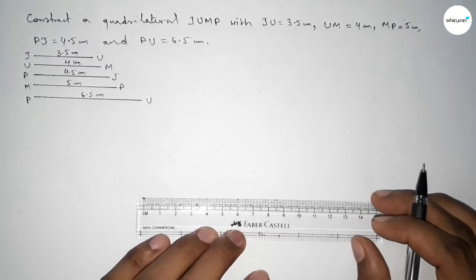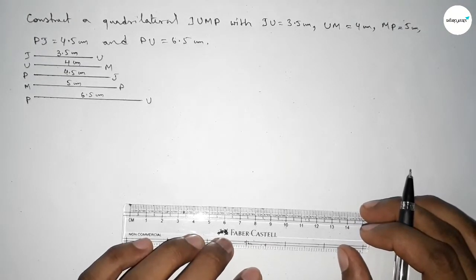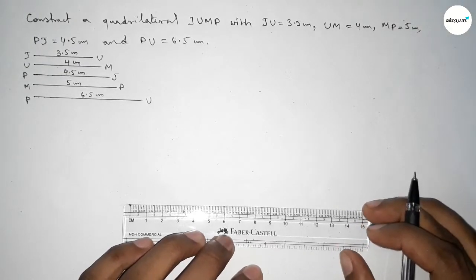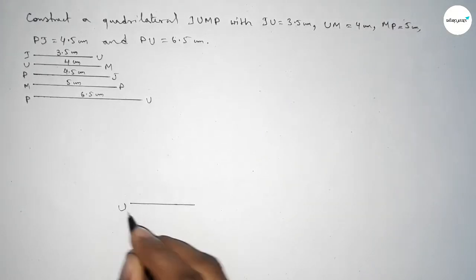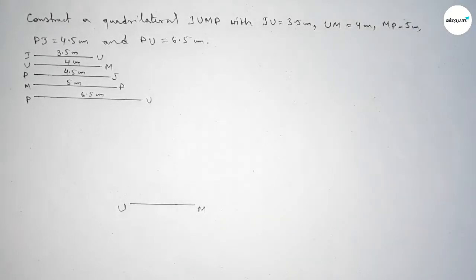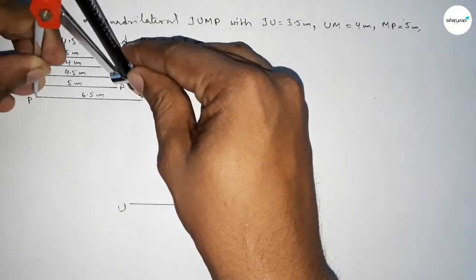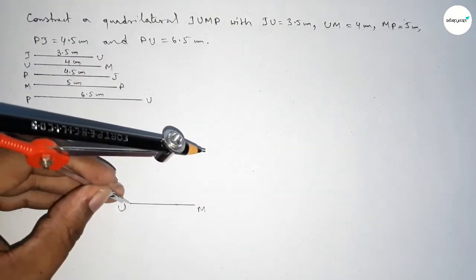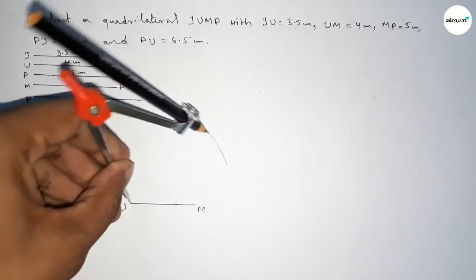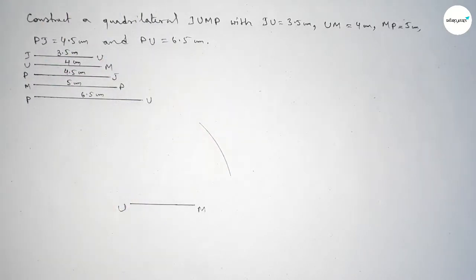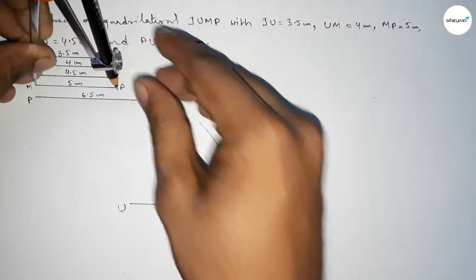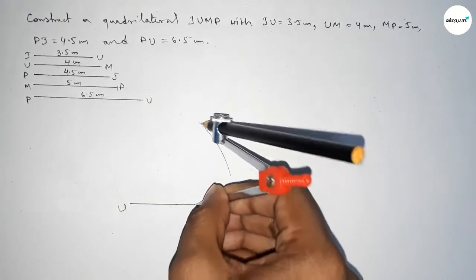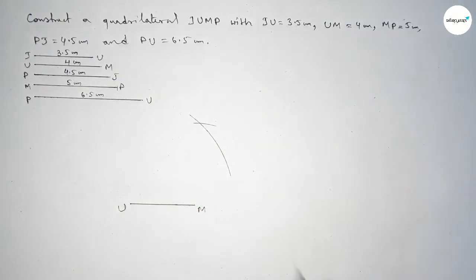Now first we draw a base line UM of length 4 centimeter, marking points U and M. Next, taking length PU equal to 6.5 centimeter with the compass, we place it on point U and draw an arc. Then taking length MP equal to 5 centimeter and placing the compass on point M, we cut an arc.